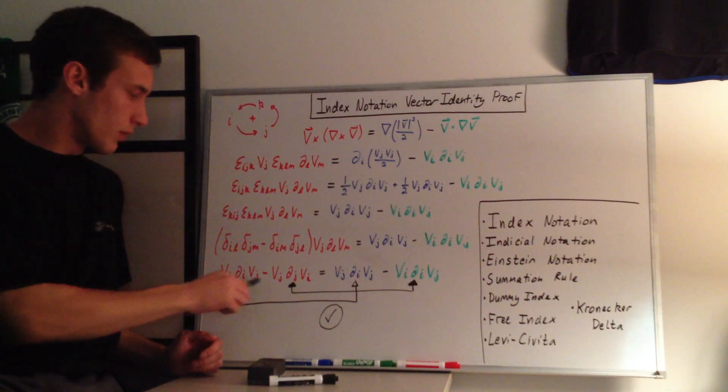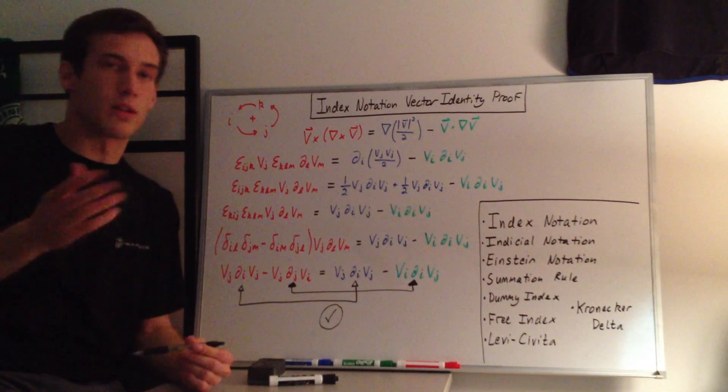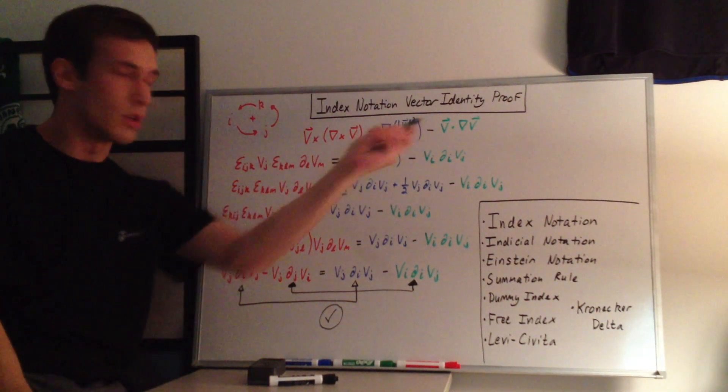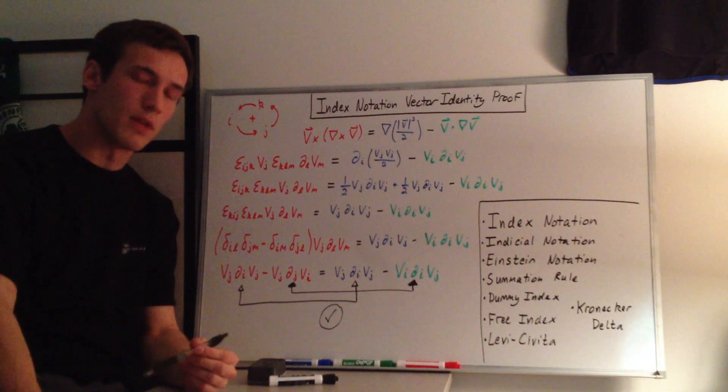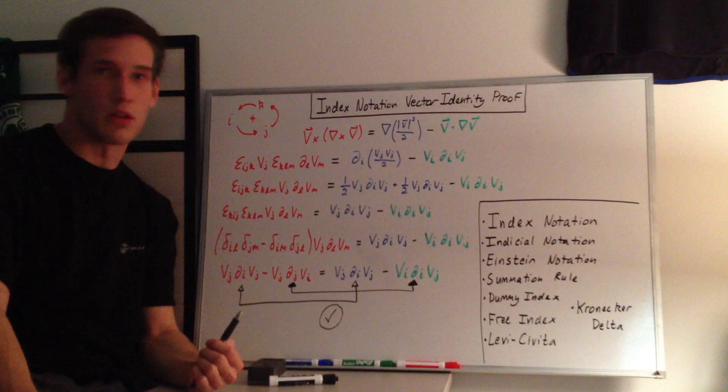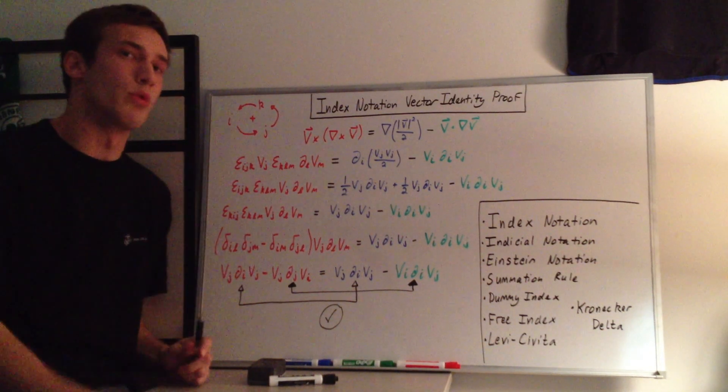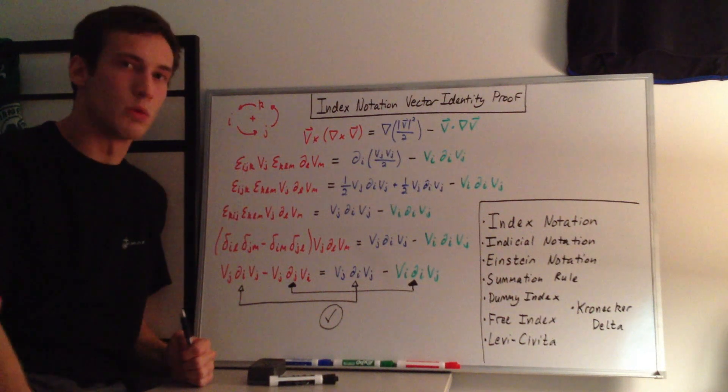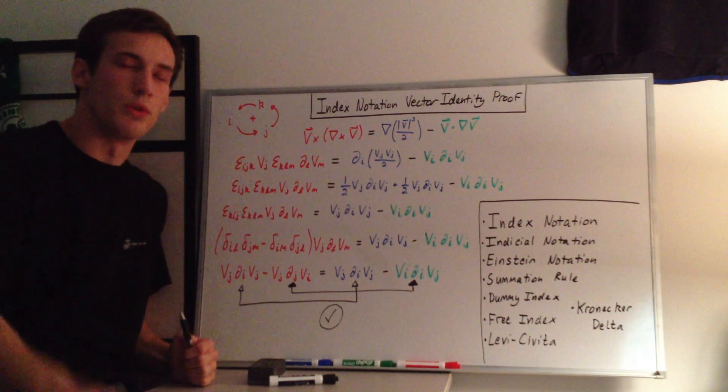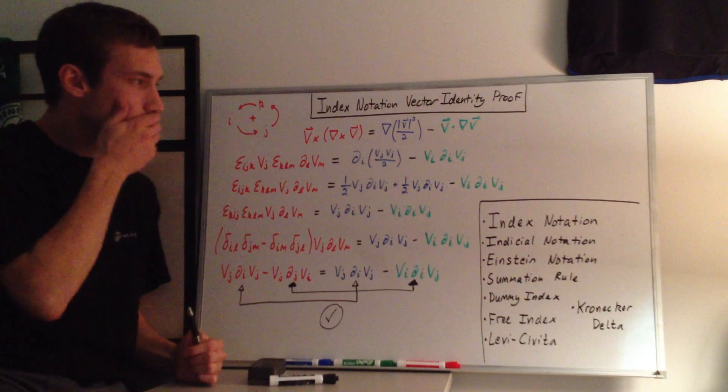So it checks out that we have this minus this is equal to this minus this, and that's the index notation, Einstein notation, indicial notation proof for this particular vector identity. Some of the PDFs I put up in the description go through other identity proofs, so you can kind of see how they work, but it's pretty basic. But again, I didn't go through what everything kind of meant. So if you were lost, I would recommend going through those notes. They're really not as complicated as they look when you first look at them.